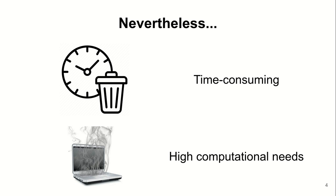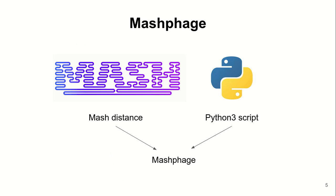In this study, we present preliminary results on the implementation of a new method, Mechphage. Mechphage aims to use the Mech distance to assign actinobacteriophage genomes into their known clusters.